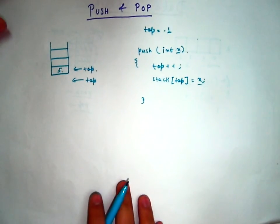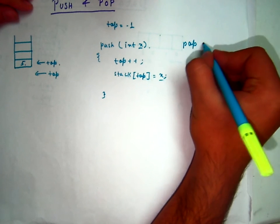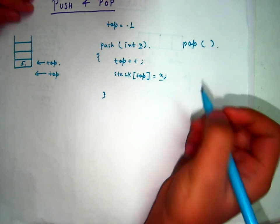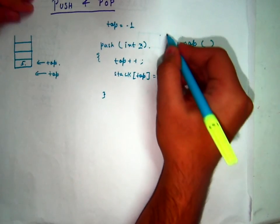Now let's see what the pop function does. Pop has no parameter but it has a return value. It can be integer, it can be a character.